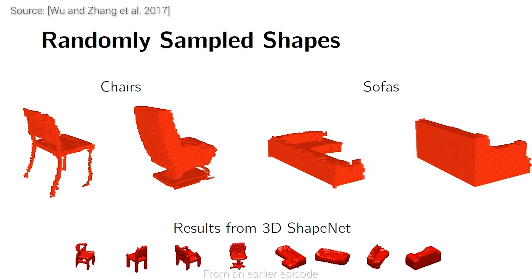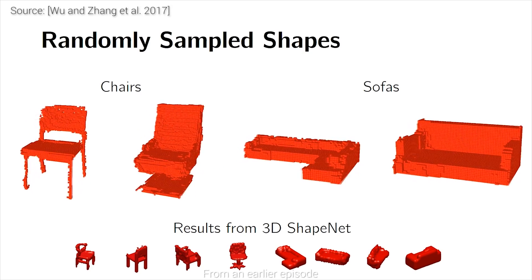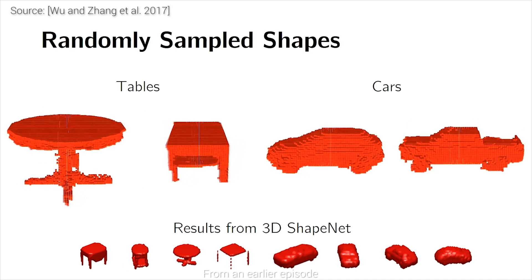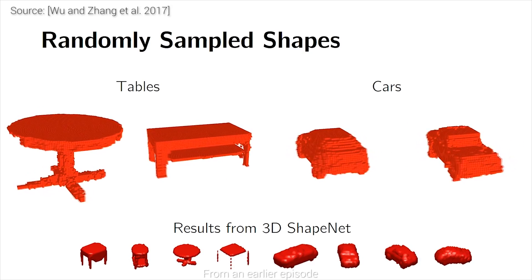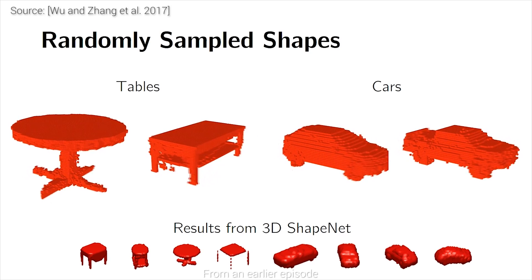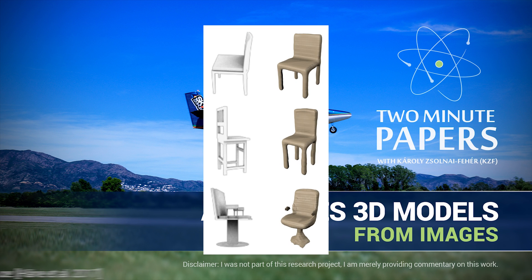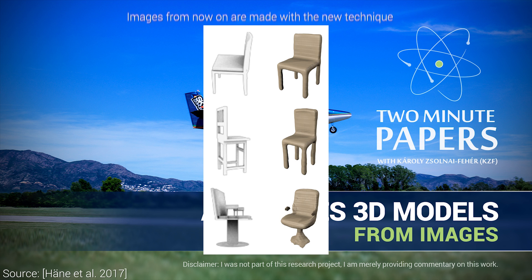We had previous episodes on this problem, and the verdict was that the results with previous techniques are great, but not very detailed. Mathematicians like to say that this algorithm has a cubic complexity, or cubic scaling, which means that if we wish to increase the resolution of the 3D model just a tiny bit, we have to wait not a tiny bit longer, but significantly longer. The cubic part means that this tradeoff becomes unbearable even for moderately high resolutions.